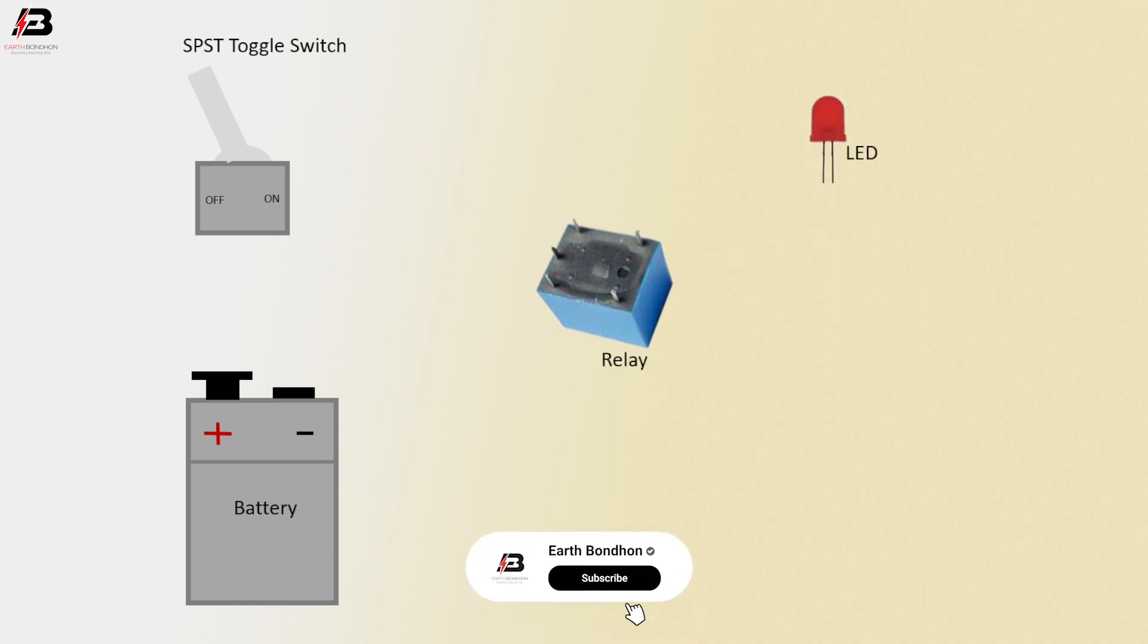So viewers, let's start. SPST toggle switch, battery, relay, LED one, LED two, resistor. Positive connection to SPST switch, positive connection outgoing from SPST switch to relay.